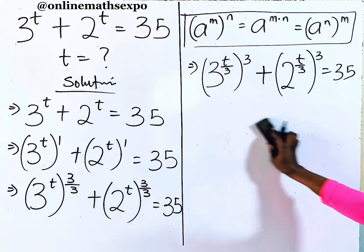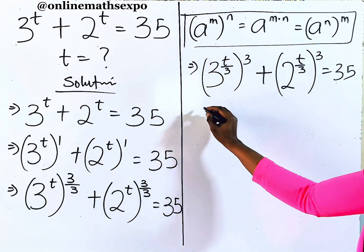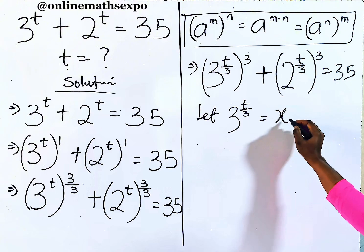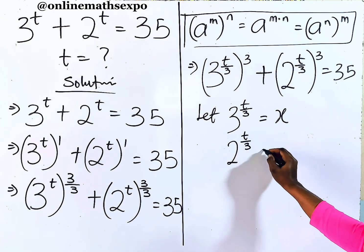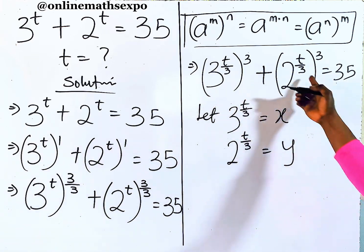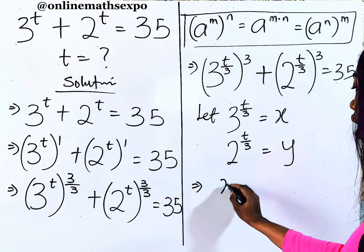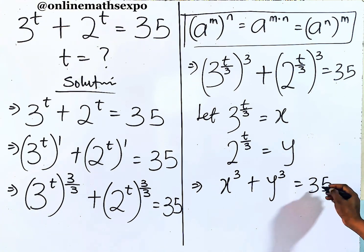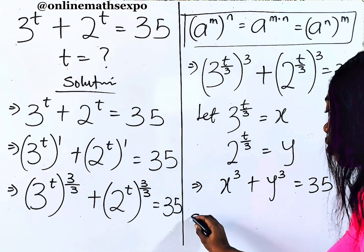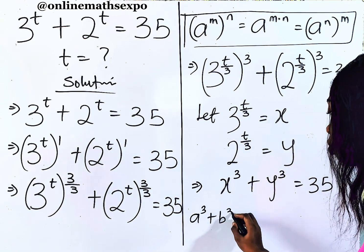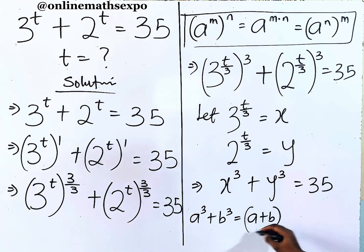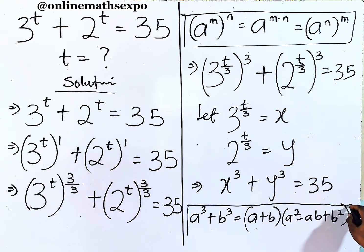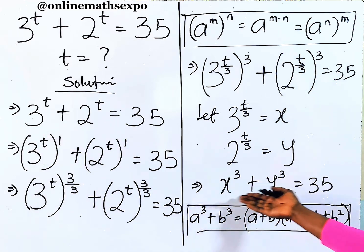Now we can replace these with new variables. Let 3 to the power of T/3 equal x, and let 2 to the power of T/3 equal y. So our equation becomes x cubed plus y cubed equals 35. And what does this remind you of? For every a cubed plus b cubed, it equals a plus b times a squared minus ab plus b squared — the sum of two cubes.